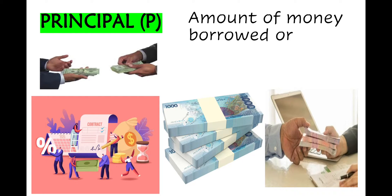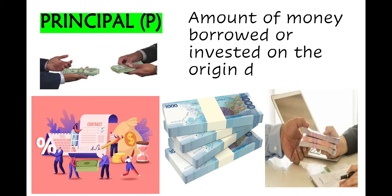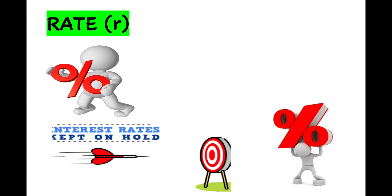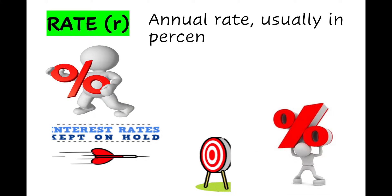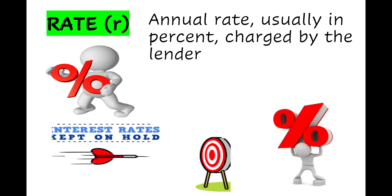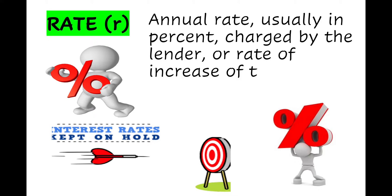Principal is the amount of money borrowed or invested on the origin date. Rate is the annual rate, usually in percent, charged by the lender or the rate of increase.